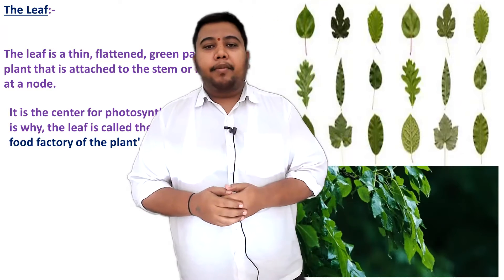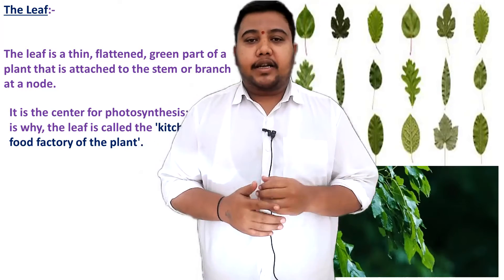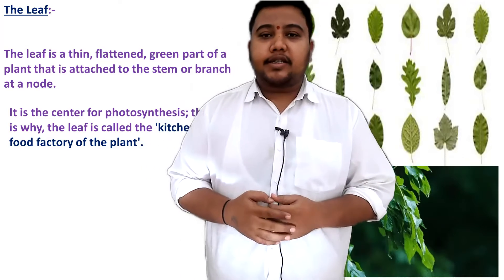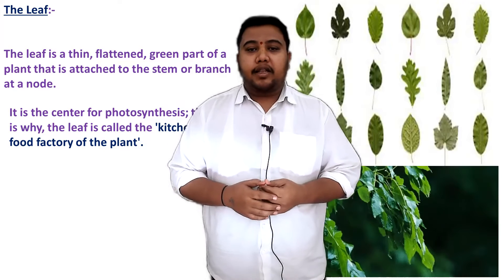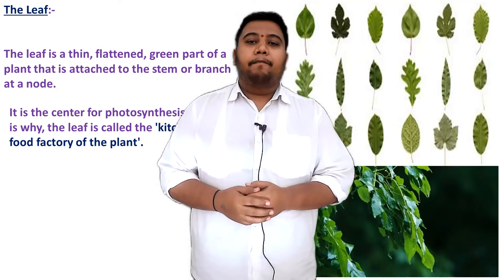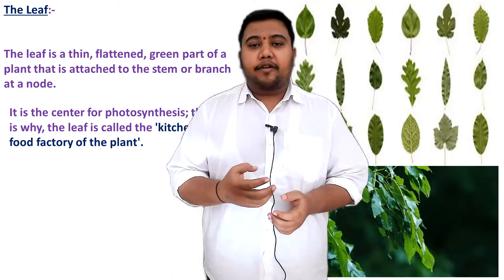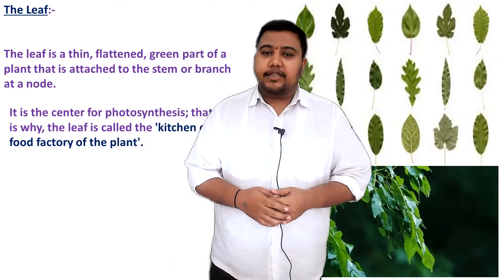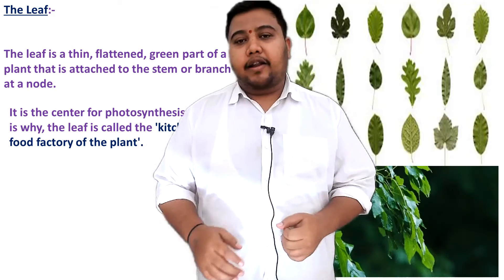Why is it called as the food factory of the plant? Because the green pigment called chlorophyll, which is present in the leaf, helps in the photosynthesis process. Photosynthesis is the food preparation process of the plant, with the help of sunlight and chlorophyll present in the leaf. By absorbing water from the roots and carbon dioxide from the atmospheric air, with the help of sunlight, the plant prepares food through the photosynthesis process. That is why the green leaf is called as the kitchen or the food factory of the plant.